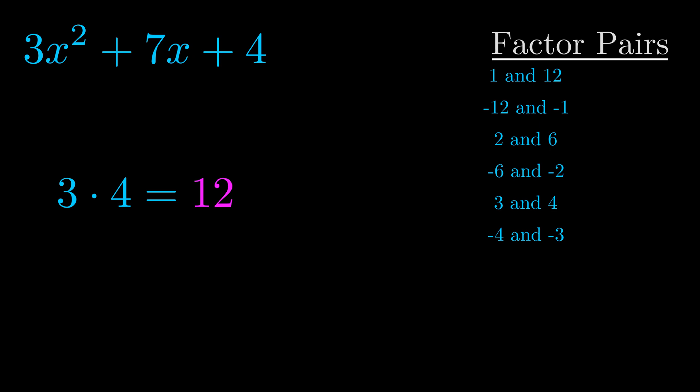The b value is the coefficient on the x term. That's the middle term, the one that we haven't done anything with yet. And really this is the only factor pair that we need.